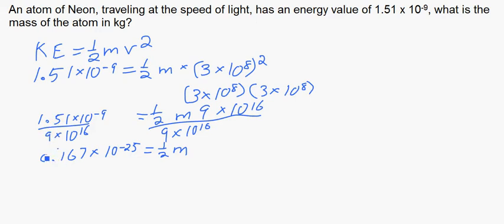And you can solve this part with a simple four-function calculator. 1.5 divided by 9 gives you 0.167. So we can break this down even more by multiplying each side by 2, which gives us about—let me write that a little better—0.335, which is still 10 to the negative 25th power, is now equal to m.